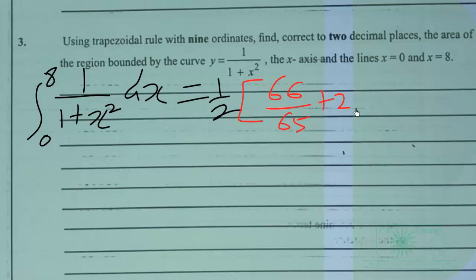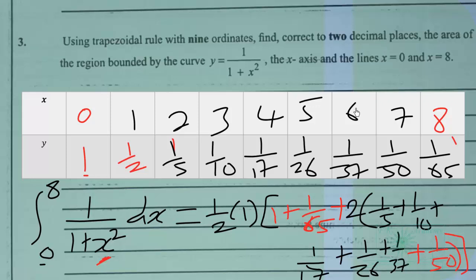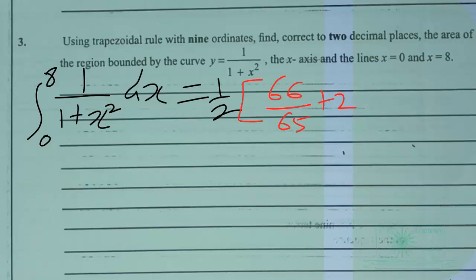Then we have 2 times when we add all of this, we are obtaining 193041 over 204425.